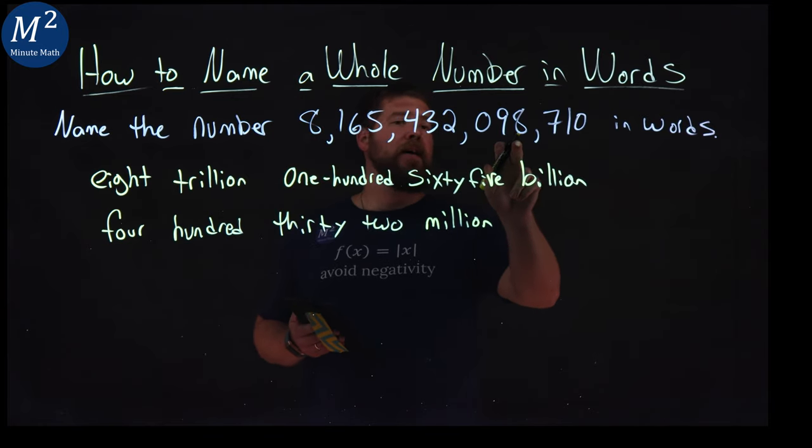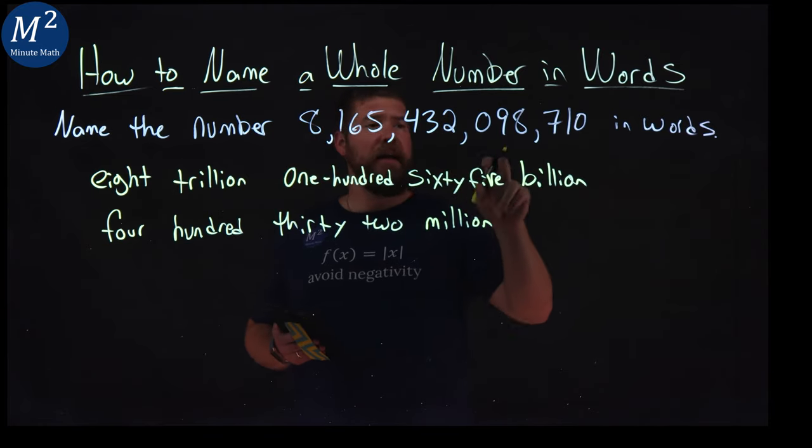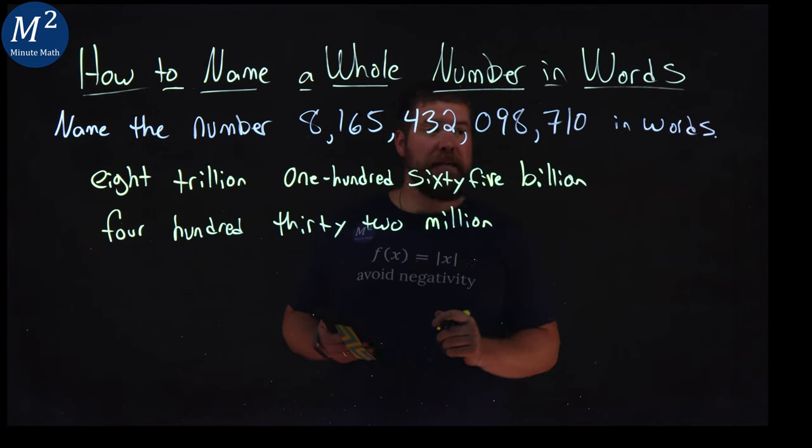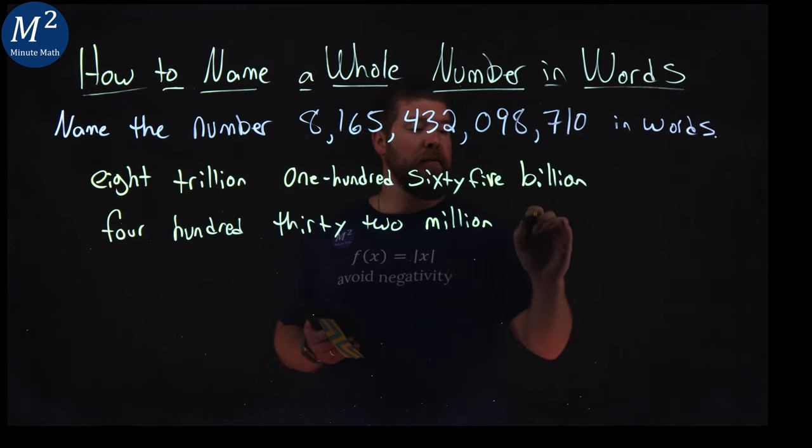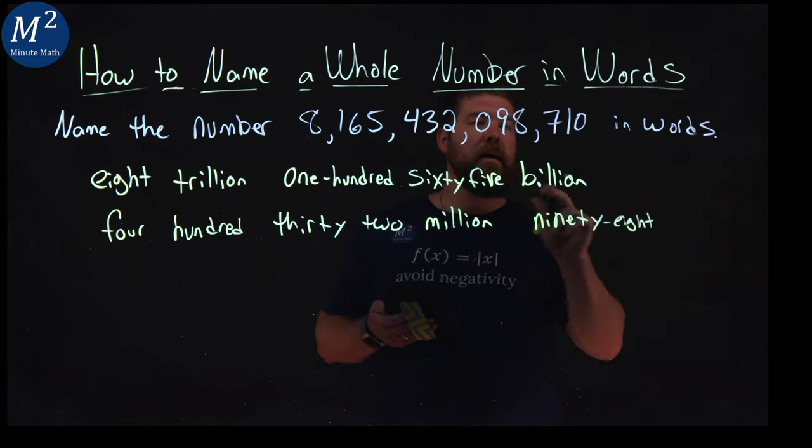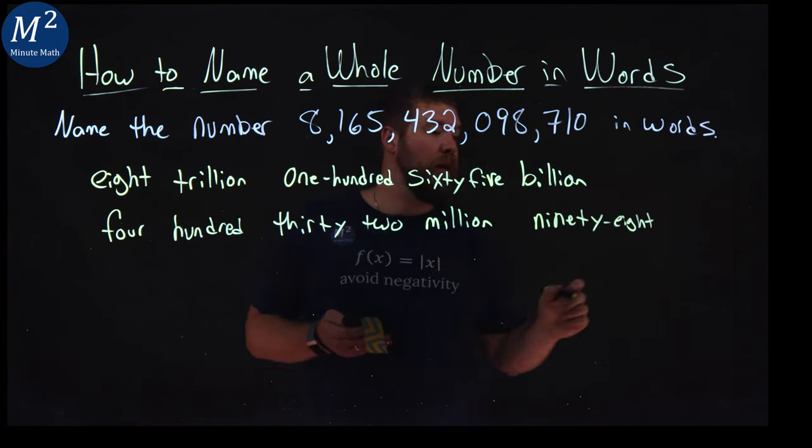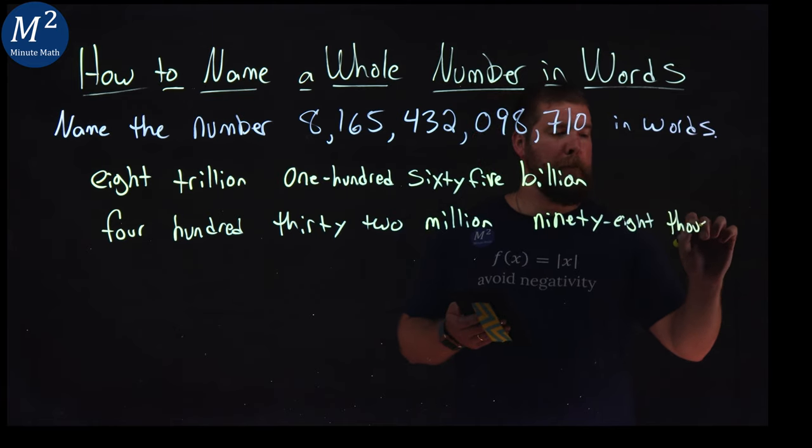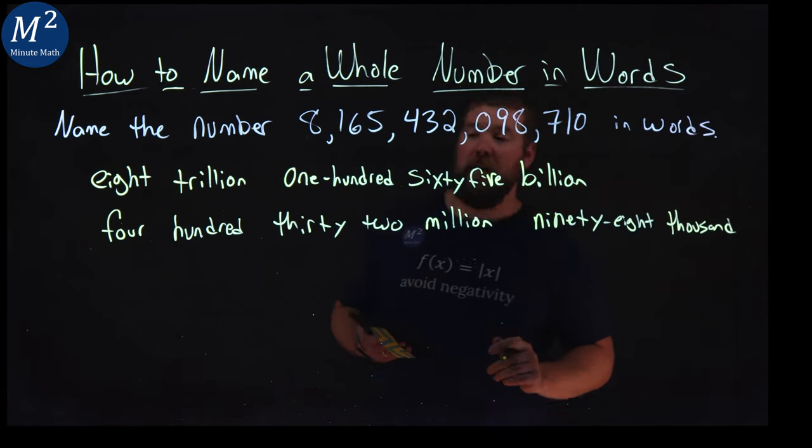Now going down here, there's a zero, so don't worry about that. And this one we call 98. And then that's going to be in the thousand section. 98,000.